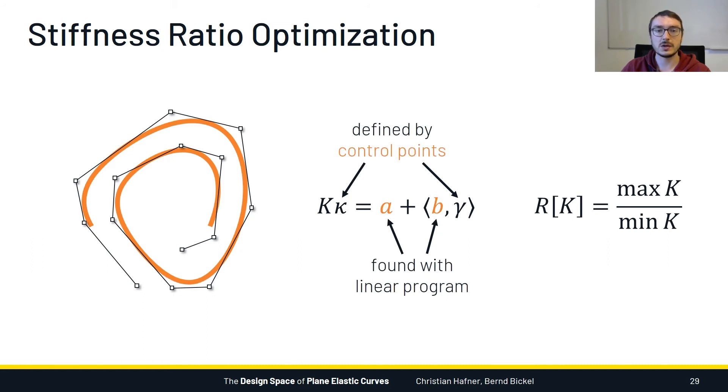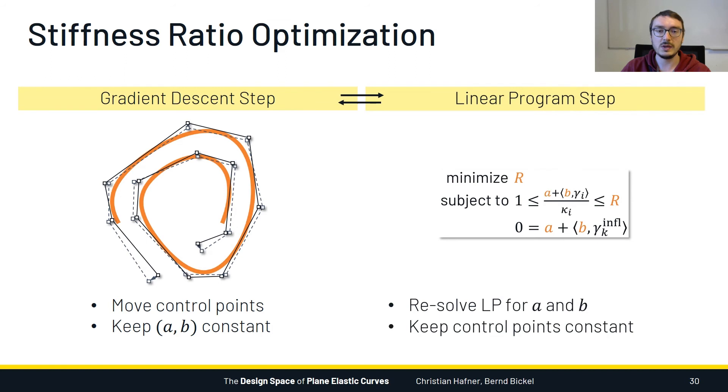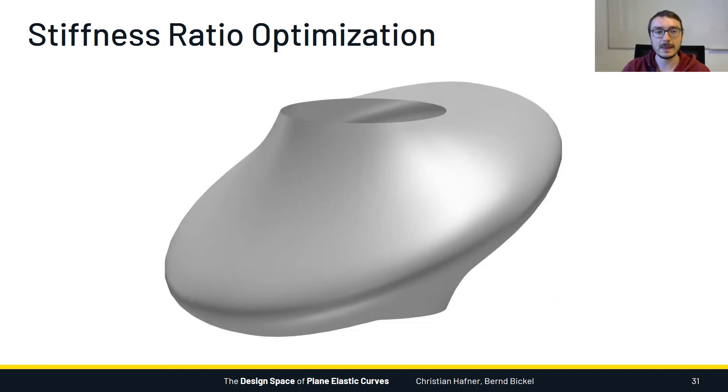Our objective is to decrease the max-to-min stiffness ratio, R, which can be done by simultaneously optimizing the control points as well as A and B. But because R is a non-linear function, a gradient-based approach is the natural choice here. One issue is that solving a linear program is not a differentiable operation. However, we can get around this problem as follows. We perform gradient descent on the control points, but we keep the values for A and B constant during this step. Then in a second step, we re-solve the linear program to attain optimal values for A and B again. We simply alternate these two steps.